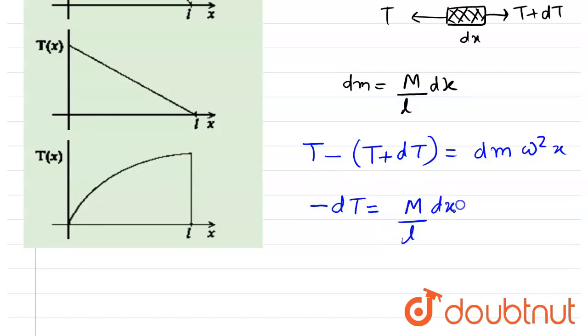So I will write -dT equals (M/l)·dx·ω²·x. This will be dT. Now if we integrate it, we'll get the tension as a function of distance from the hinged point. Let's integrate from 0 to T(x), where x is the distance from the axis of rotation. If x equals 0, we don't know the value of T at x equals 0.